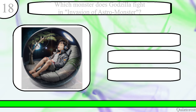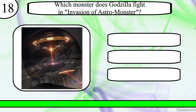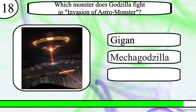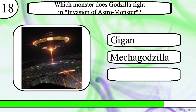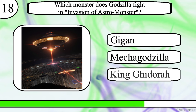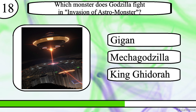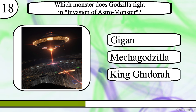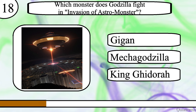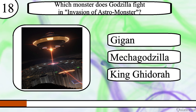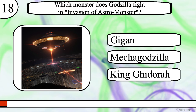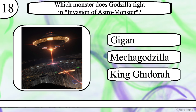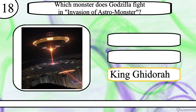Question 18. Which monster does Godzilla fight in Invasion of Astro Monster? Gigan, Mechagodzilla, or King Ghidorah? The correct answer is King Ghidorah.